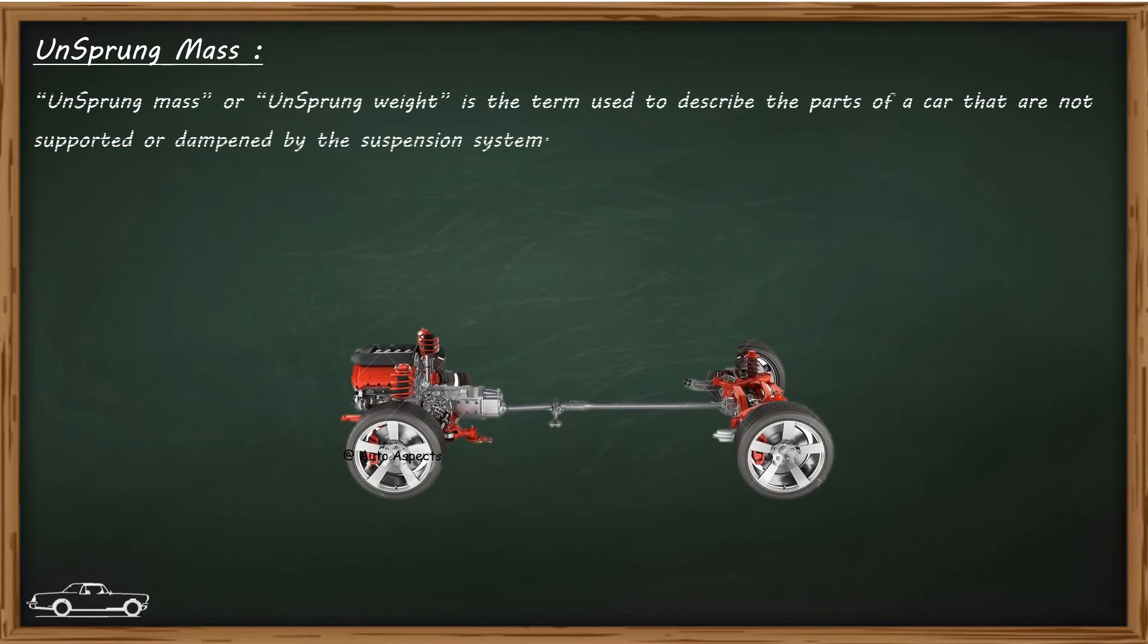Now let's look at what is unsprung weight. Unsprung weight is the mass of the vehicle's suspension system and components which are not supported by the dampening of the suspension.